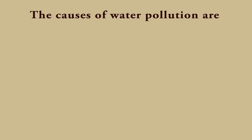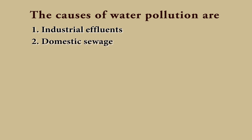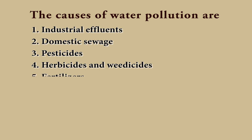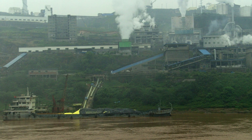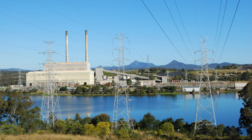The causes of water pollution are industrial effluents, domestic sewage, pesticides, herbicides and weedicides, fertilizers, heavy metals like lead, mercury, arsenic, radioactive elements, oils, silt. Also, presence of harmful bacteria, virus and plankton makes water polluted.